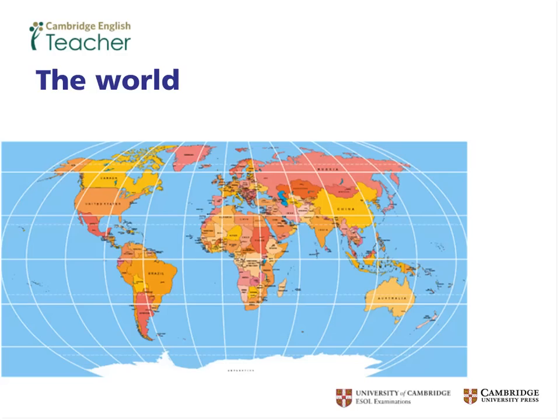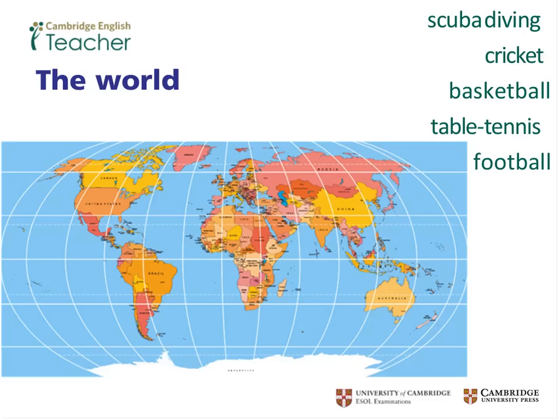The idea is that students write the given words on the map. For example, 'scuba diving' — I would write that in the Red Sea. Here are the words for the example: scuba diving, cricket, basketball, table tennis, and football. If you don't have access to a map, it doesn't matter — you can still do the activity. Ask students to write the word you tell them and next to it write the country, region, sea, or place where they think that word is connected. So next to 'scuba diving' we write Red Sea; next to 'cricket' we put India or Pakistan; next to 'basketball' and so on.